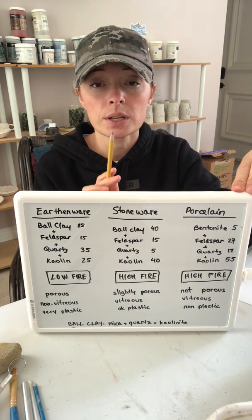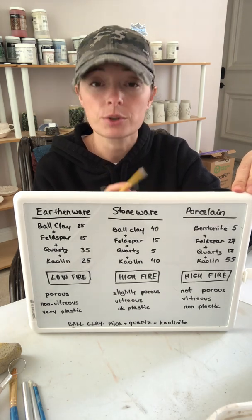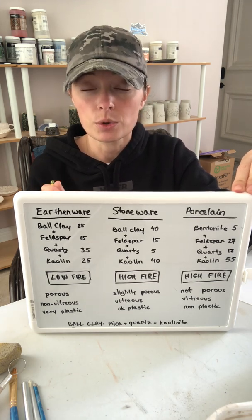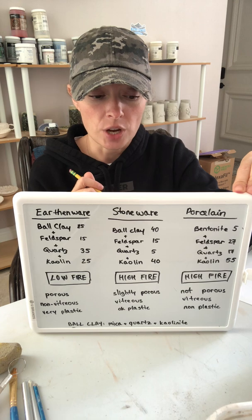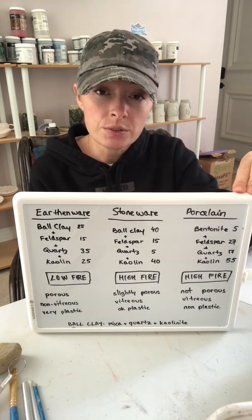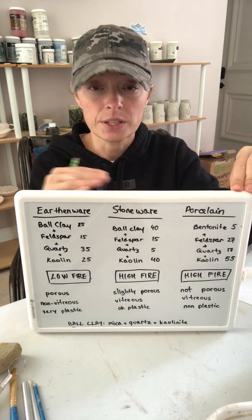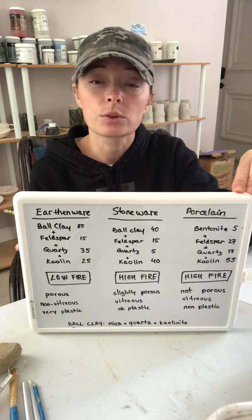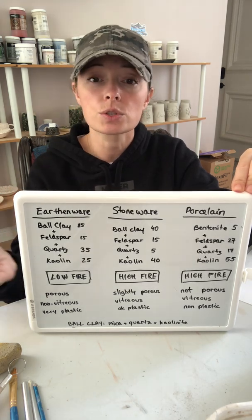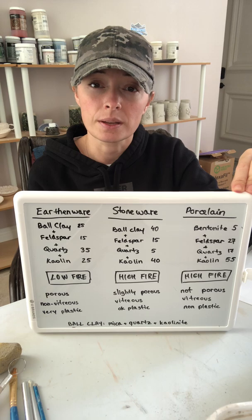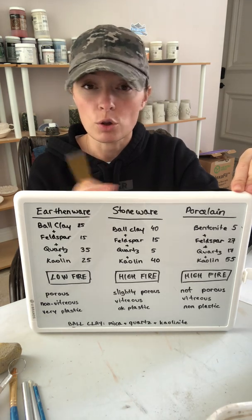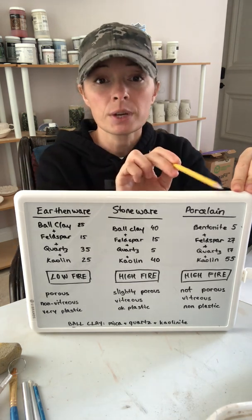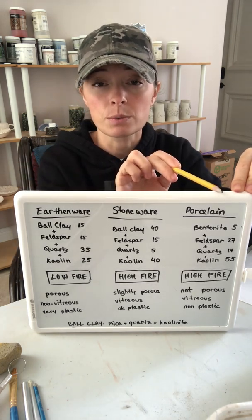Earthenware gets fired at a low temperature and will actually blister if you fire it higher. Stoneware and porcelains get fired much higher. Earthenware is very porous because of the sintering-type adhesion of the molecules, while stoneware is much less so. Porcelain is almost completely non-porous because everything is fused with those feldspars flowing in between the clay molecules, leaving almost no space. So absorption for earthenware is very high, and by the time you get to porcelain it's almost non-existent.